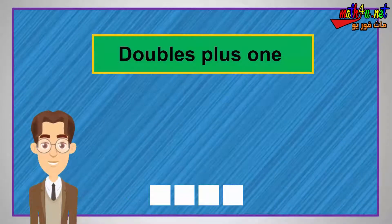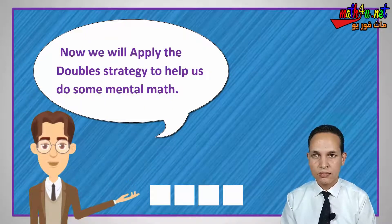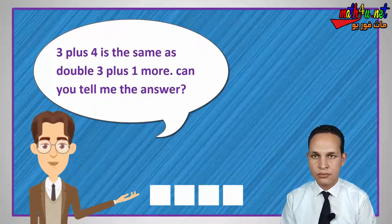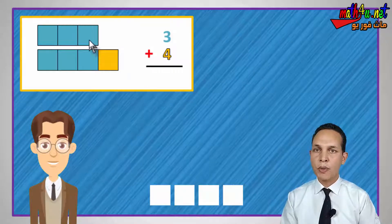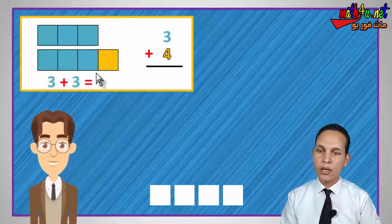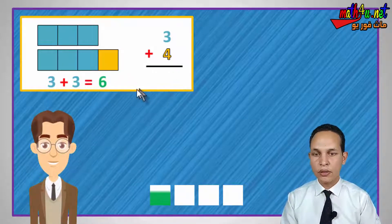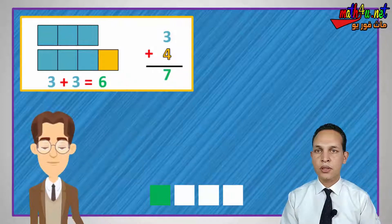Double plus one. Now we will apply the double strategy to help us do some mental math. Since we know three plus three equals six, we can use this double to help us solve three plus four. Three plus four is the same as double three plus one more. Three plus four equals seven — because three plus three equals six, and six plus one equals seven.